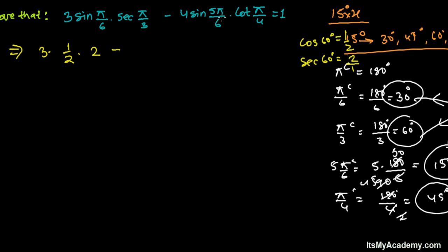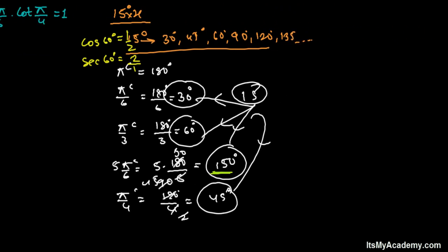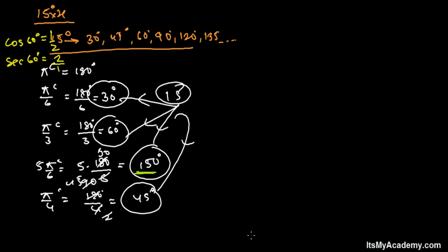Now for sine pi by 6 - sorry, sine 5 pi by 6. It's sine 150 degrees. Sine 150 degrees value you can easily find out if you're not remembering the trigonometric table. It's actually sine 30 degrees, that's 1 by 2. But how it came, let me show you once again.